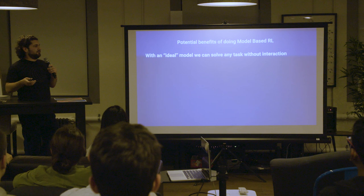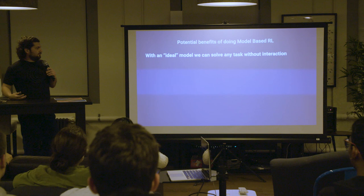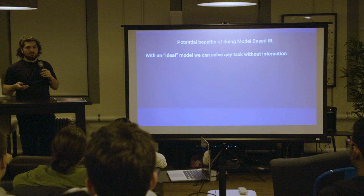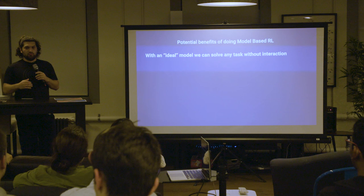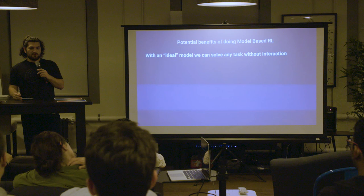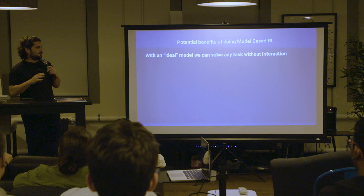So what are the potential benefits of actually using an internal model? The kind of grail is that if you have a perfect and ideal model, you can solve any task without ever interacting with the environment. If you have a perfect model you can simulate it as much as you want without interacting with the true environment and you can solve any task — though solving that task might still be hard.